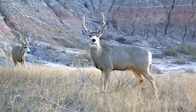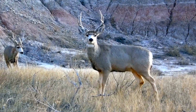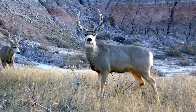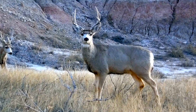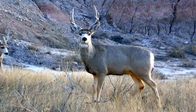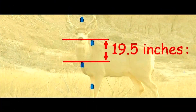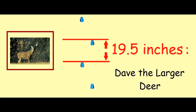Now let's say we found a different set of tracks left by a deer. Again, we have to make sure it's in a direct register and in a diagonal walking pattern. Let's say this stride length was 19.5 inches. This we can now name as Dave the larger deer. Dave's body is bigger, therefore it leaves a 19.5-inch stride.